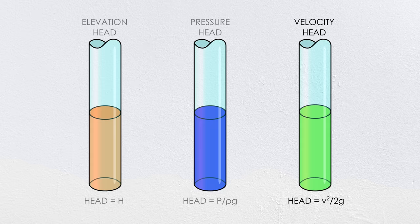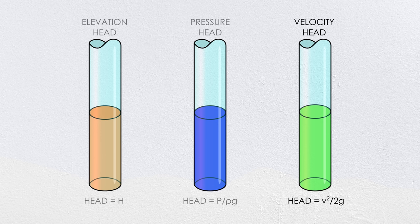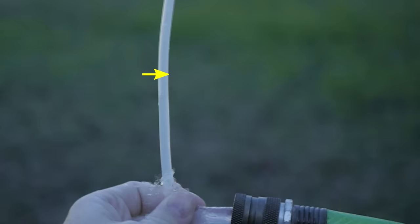The final type of energy is velocity head, which relates to a fluid's kinetic energy. The conversion for velocity head is velocity squared divided by 2 times the gravitational acceleration. I can demonstrate the equivalent column of water using a tool called a pitot tube.